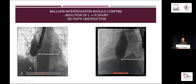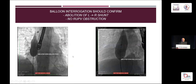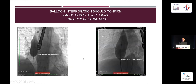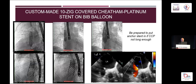We do balloon interrogation using an ASD sizing balloon, combined with an angiogram in the SVC as well as in the right upper pulmonary vein, in order to show patency and non-compression.